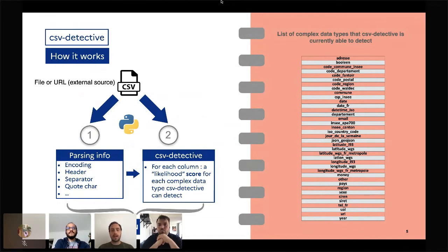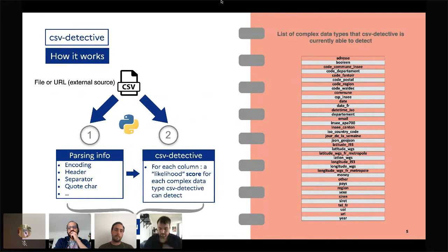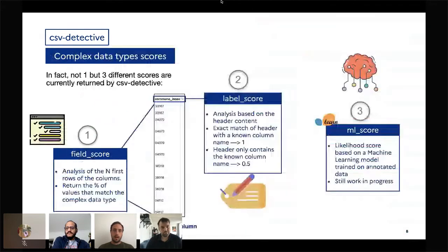On the right you can see some examples of the types that CSV Detective can detect. We have very common types that could appear in other countries, like latitude, longitude, JSON format, etc. But we also have very specific French formats that must respect a very specific format — like Siren and Siret, which are French company identifiers. We have very specific rules to detect this kind of complex type. In the end, all this is returned in a JSON-like format.